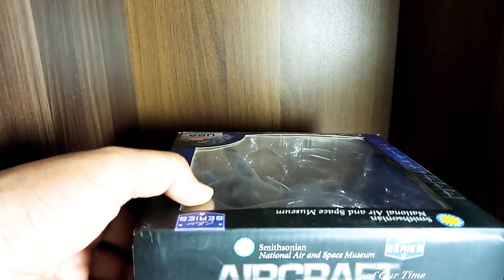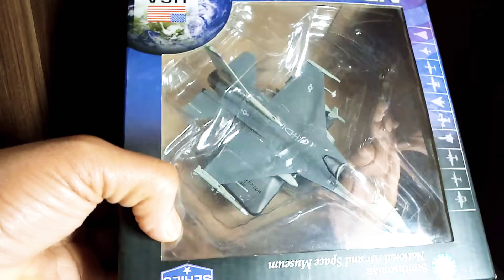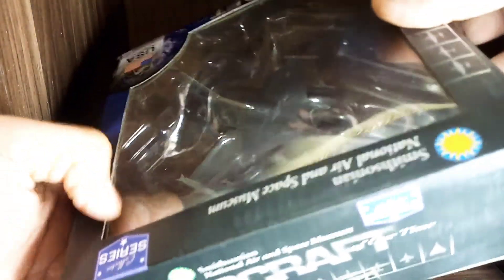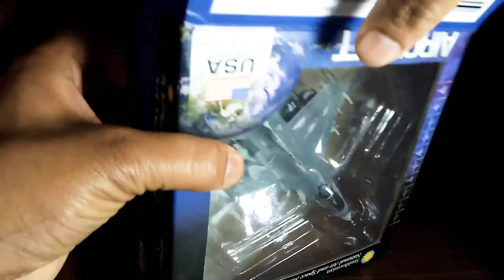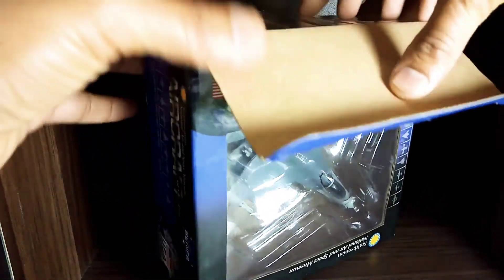Now F-16 A and B were the initial production variants with block 1, 5, 10 and 20 versions. Block 15 was the first major change with the longer horizontal stabilizers, the most mass-produced. Let's open up this one. So all F-16s A and Bs were later upgraded to midlife upgrade, also called the MLU.